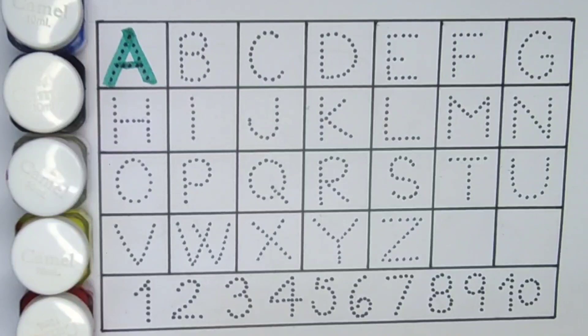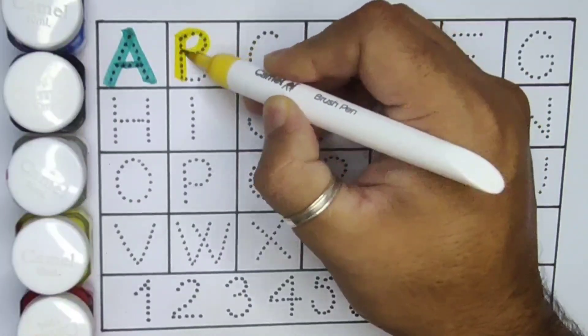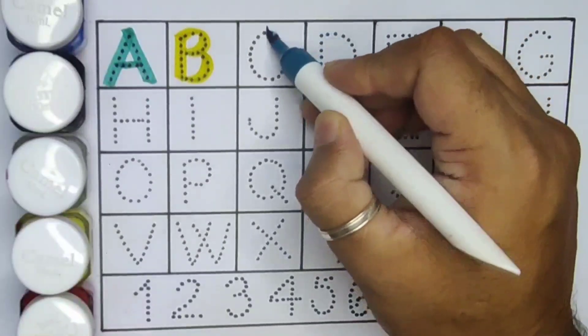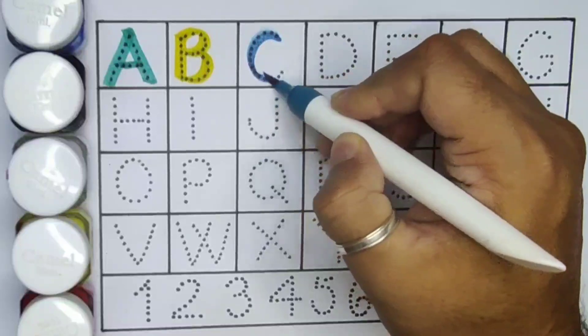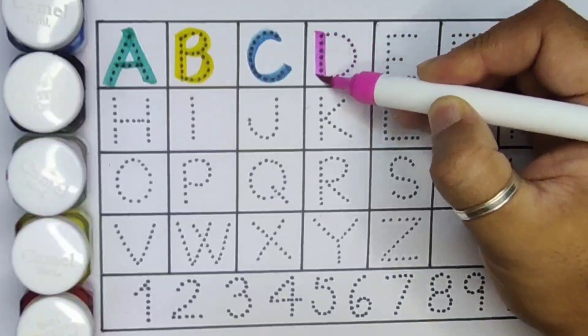Next is B, B for butterfly. Next C, C for car. Next is D, D for dolphin.